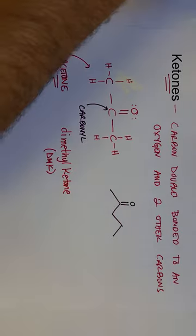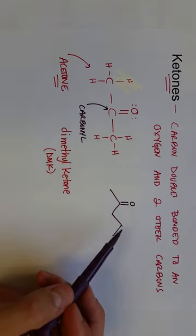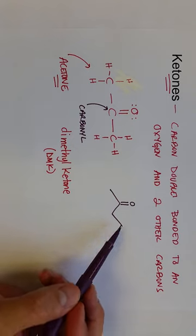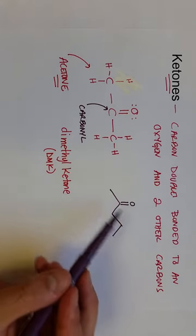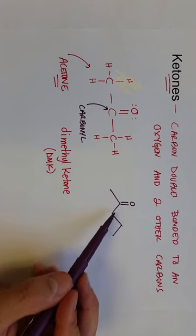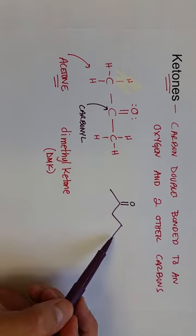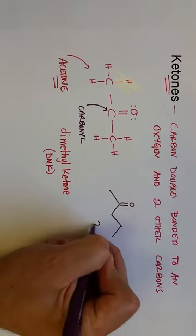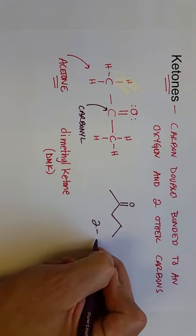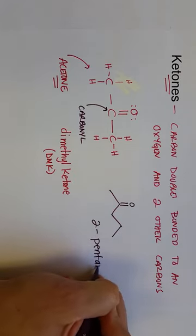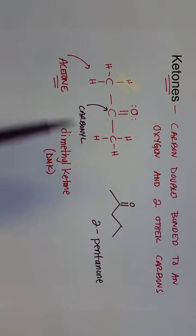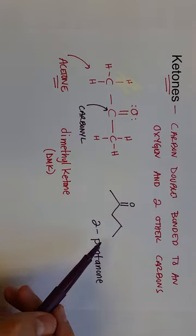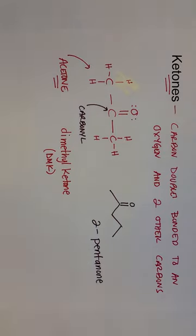If you've got a bigger ketone, you can name it a couple of different ways. So with a methyl group on one side and one, two, three — a propyl group on the other — you could say methylpropyl ketone. Or you can count the full chain: one, two, three, four, five — that's pentane — and the carbonyl is on the second carbon, so this would be 2-pentanone. The systematic way is to number where the carbonyl group is and end in '-one'.